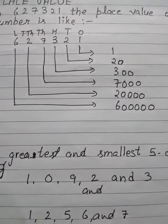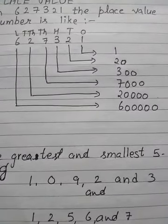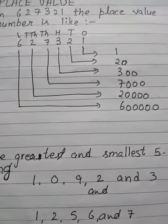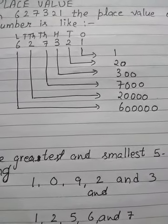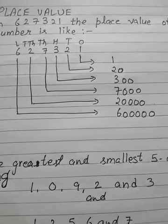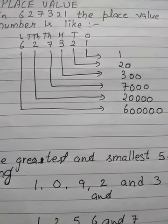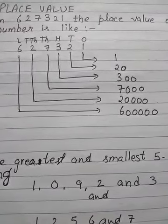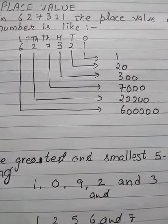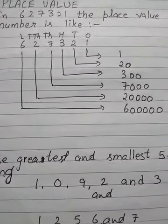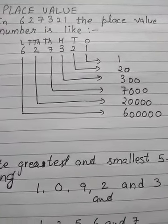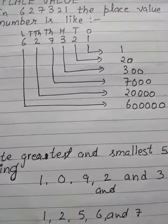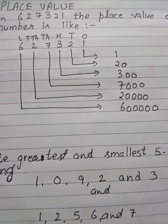On tens there is a 2, so 20. On hundreds there is a 3, so 300. On thousands there is a 7, that means 7,000 because the place value is 1,000. 10,000 — there is a 2, so 20,000. And at the lakh place, 6 lakh, because the digit given at the lakh place is 6.